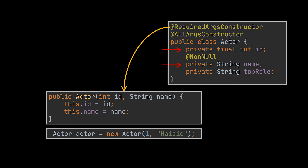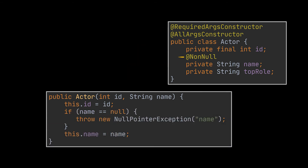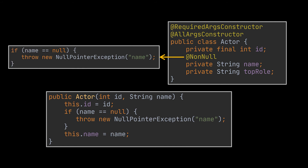This leads us to the @NonNull annotation. As you probably guessed, this annotation marks a field as required to be not null. The code generated when this annotation is added ensures that if the provided variable is null, a NullPointerException will be thrown. The @RequiredArgsConstructor we just covered will look something like this when we are using the @NonNull annotation.